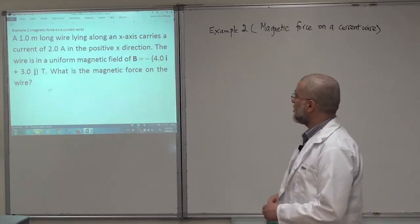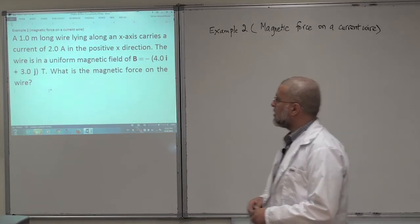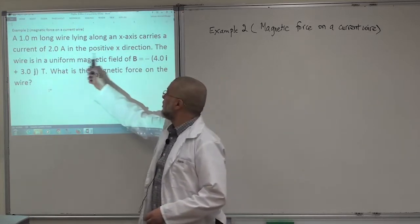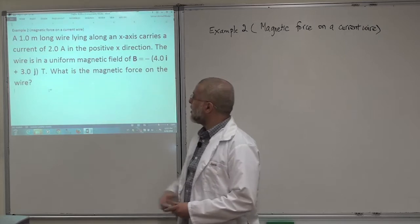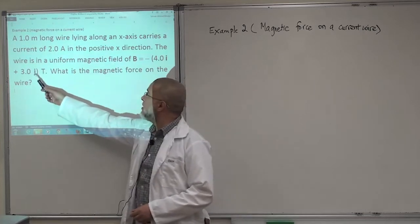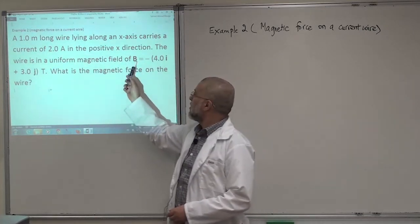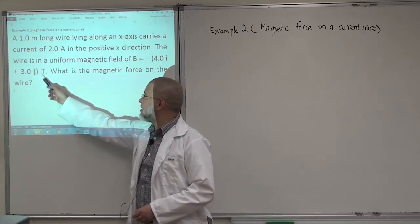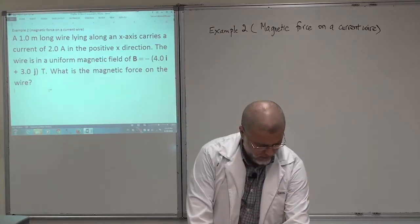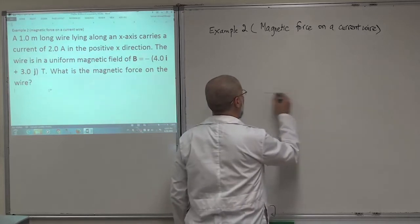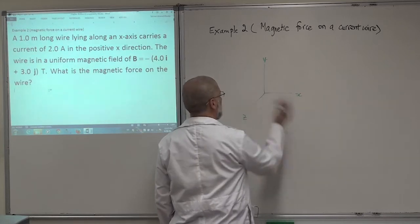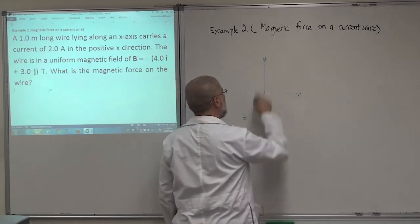Now let's look at a second example related to the magnetic force on a current wire. A 1-meter-long wire lying along the x-axis carries a current of 2 ampere in the positive x direction. The wire is in a uniform magnetic field given by minus 4i plus 3j tesla. I'll draw this with x, y, and z axes.